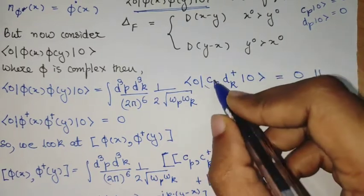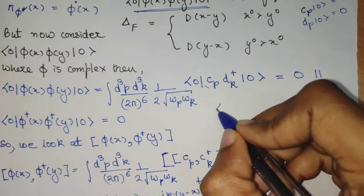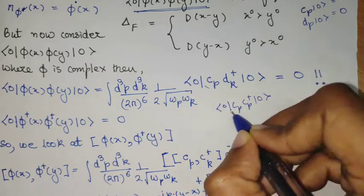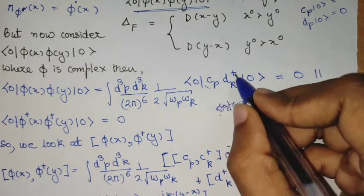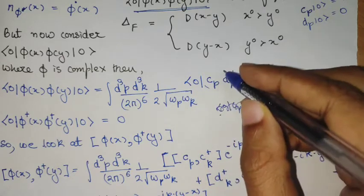This was also the possible non-zero term in case of the real scalar field where if you see zero CP, CP dagger zero, this will be a non-zero term. But in this case, because I have CP and DP, I see that this term will also go to zero because they commute.